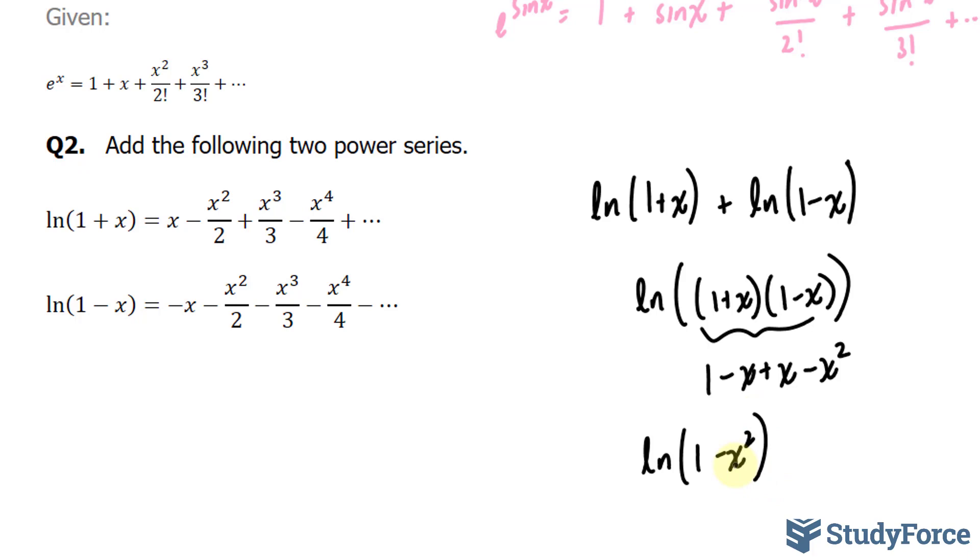Now, to add two power series, what you do is you go term by term and add them together. So x plus negative x, that gives us 0. What about these two? Negative x squared over 2 plus minus x squared over 2. That's equal to minus 2 times x squared over 2. This plus this is equal to nothing. They're the same term with opposite signs. This plus this expression, this is negative and this is negative. We end up with two of those, x to the power of 4 over 4.